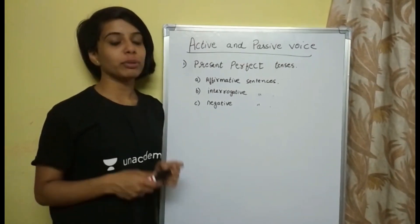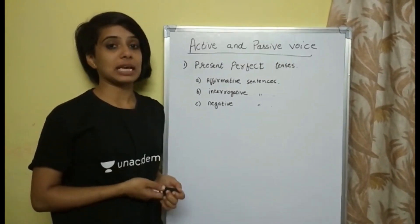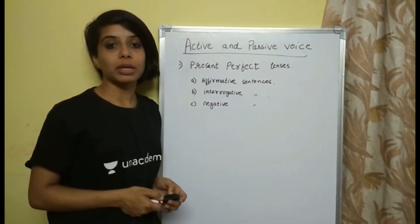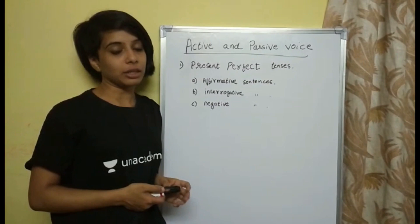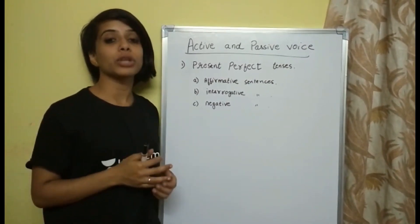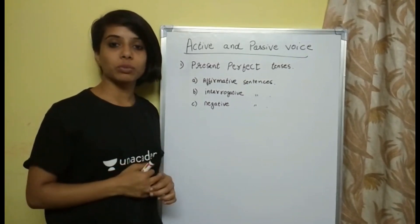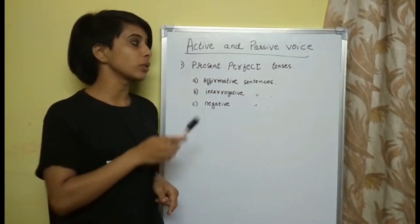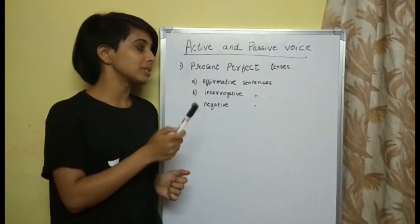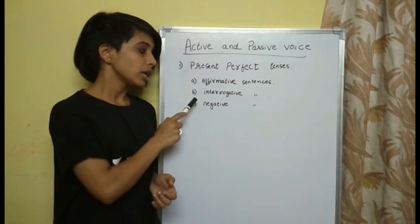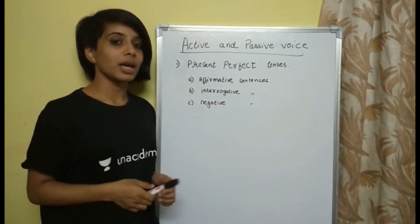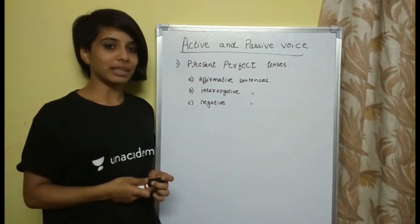Hello guys, my name is Sriniti. I've been working with AN Academy for a few months now — I teach English on that platform. You guys can download the AN Academy learning app and watch English lessons or whatever you want to learn. In today's lesson, I'm going to teach you how to change a sentence from active voice to passive voice, specifically in present perfect tense. We will cover affirmative, interrogative, and negative sentences. I hope this video helps you guys.